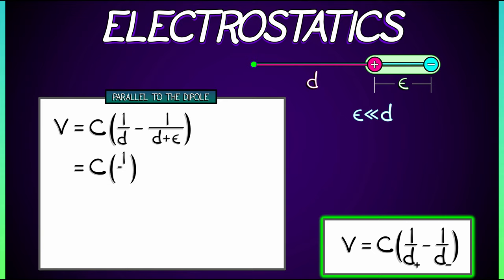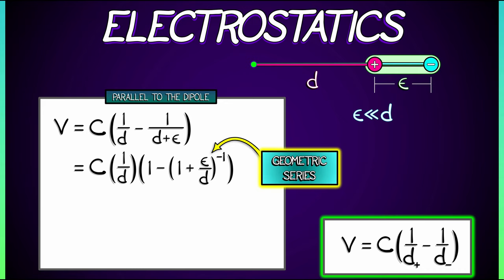Factoring out a one over D, we're left with one minus quantity one plus epsilon over D to the negative one power. Aha! This is different now. This is appropriate for a geometric series, which again is legal because epsilon is much, much less than D.